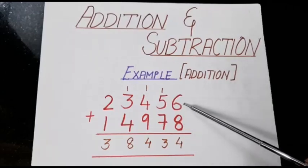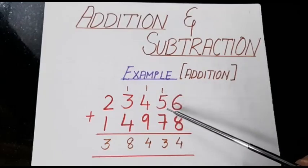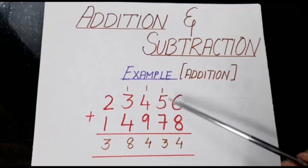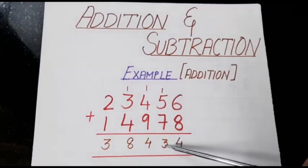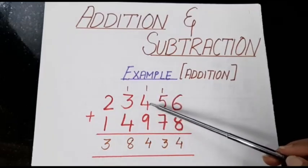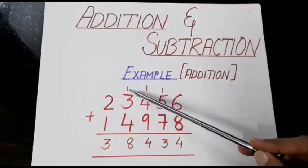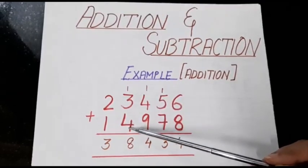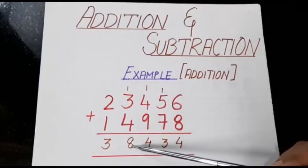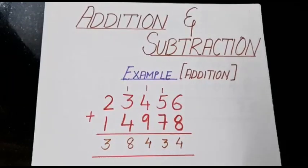8 plus 6 is 14, so we write 4 here and carry 1. Then 7 plus 5 is 12, plus 1 carried is 13, so we write 3 and carry 1. Next, 9 plus 4 plus 1 is 14, so we write 4 and carry 1. Next, 1 plus 3 plus 4 is 8, and then 2 plus 1 is 3. This is how we do the addition problem.